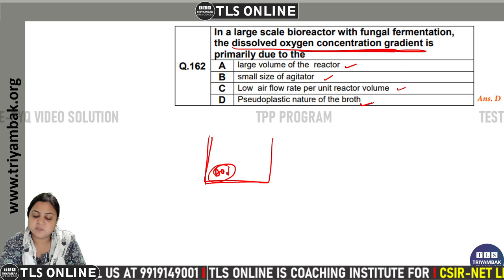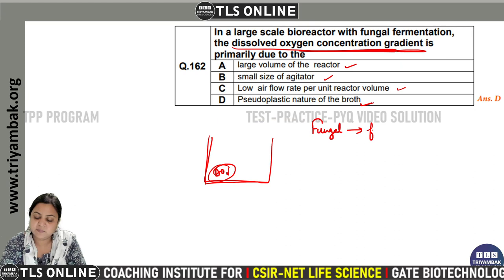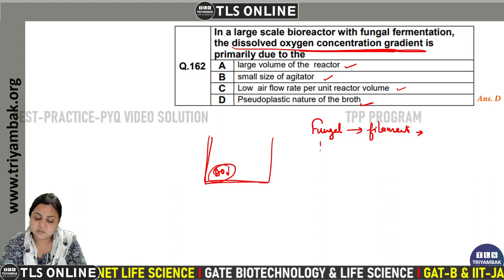What happens in fungal filaments? The nature of the broth becomes pseudo-plastic due to the presence of fungal filaments.